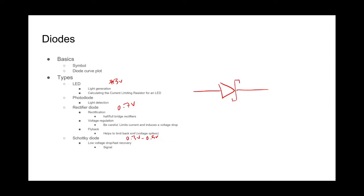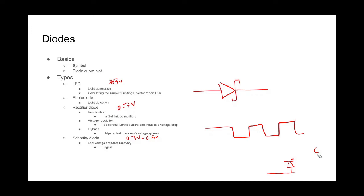If you have a communication protocol with a lot of ups and downs, you could put a Schottky diode between the input and your microcontroller. Basically, they are used to help preserve a signal and to help a line recover from a voltage drop or from a voltage spike.